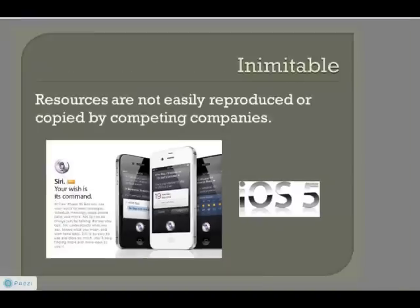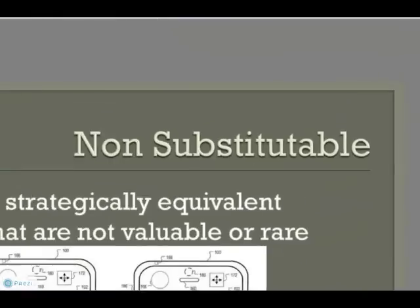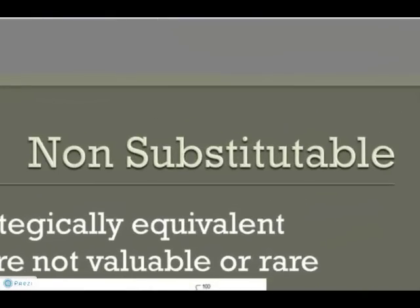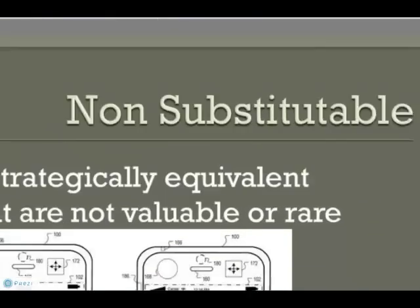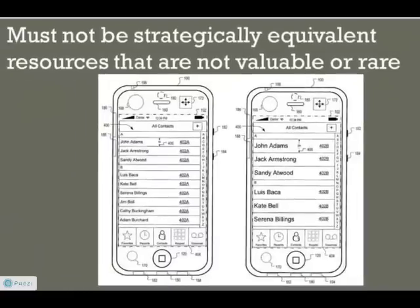Lastly, we have the non-substitutable characteristic. An example of this would be patents. Patents allow an original idea to belong to the owner between 6 and 20 years. By maintaining ownership of an idea, other companies cannot produce the same products without permission.